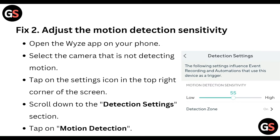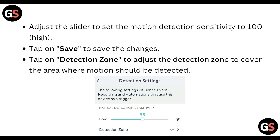Then adjust the motion detection sensitivity. Open the Wyze app on your phone, select the camera that is not detecting motion, tap on the settings icon in the top right corner of the screen, scroll down to the Detection Settings section. Adjust the slider to set the motion detection sensitivity to 100 (high) and tap Save to save the changes. Tap on Detection Zone to adjust it to cover the area where motion should be detected.